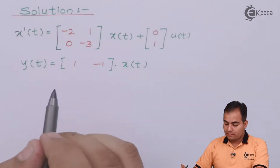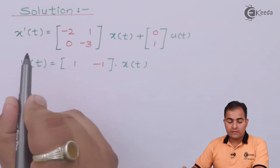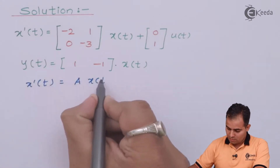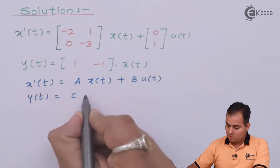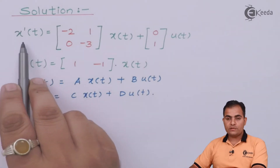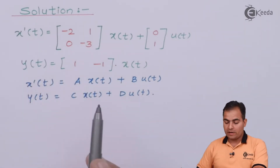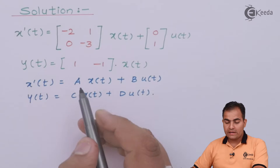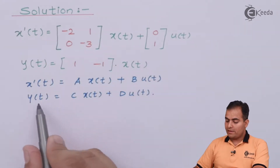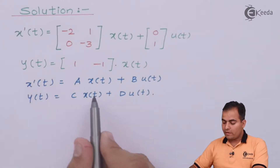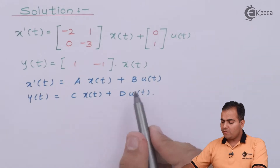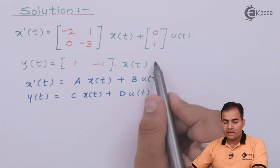We compare this input state variable model with the standard format. After comparing, my A matrix is this and my B matrix is this. Comparing the output state variable model with the given equation, my C matrix is this and the D matrix is absent, so D value is 0.